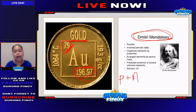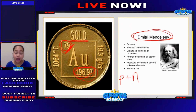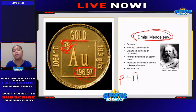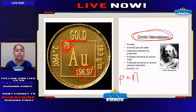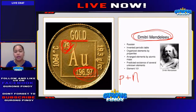Gold in your periodic table has the atomic number of 79 and atomic mass of 197. How many protons does gold have? Your answer would be 79, because your atomic number is always equal to the number of protons, and it can also be equal to the number of electrons if your atom is uncharged. If the question instead asks how many neutrons gold has, your answer would be 197 minus 79 — subtract the number of protons from the atomic mass to get the number of neutrons.